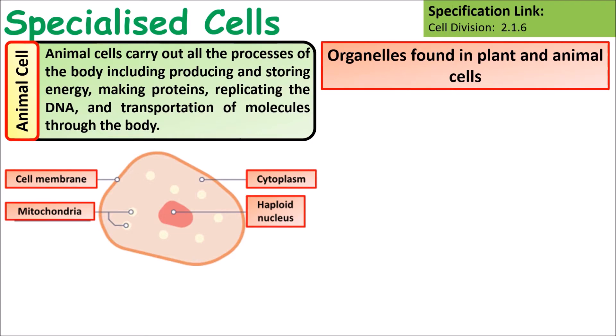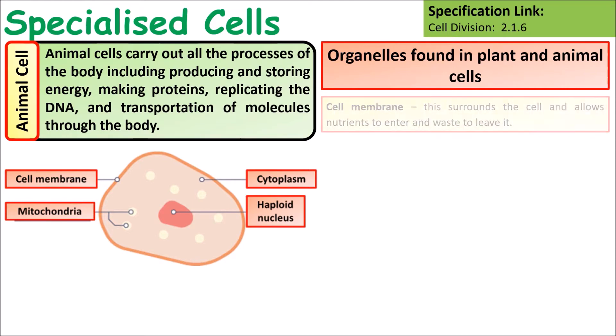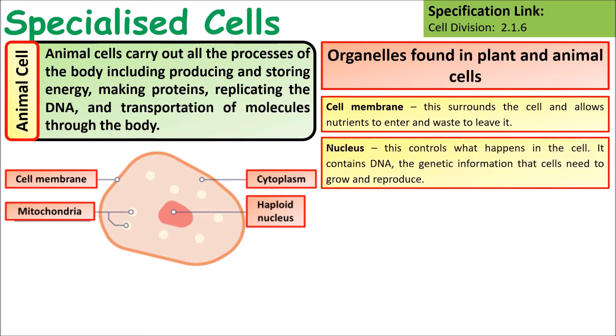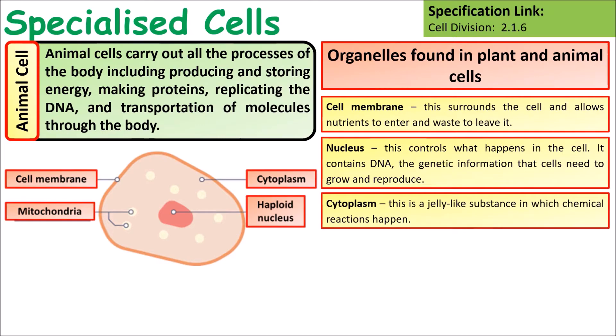Animal cells carry out all the processes in the body and contain certain organelles. They all have a cell membrane made of phospholipids on the exterior, which controls what enters and leaves the cell. They all have a nucleus which controls cell function and contains DNA. They also have cytoplasm where chemical reactions take place.